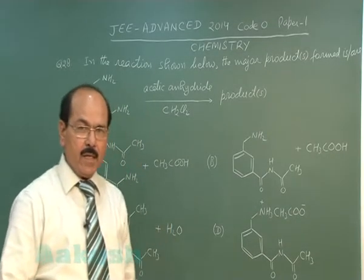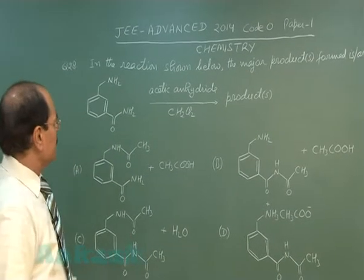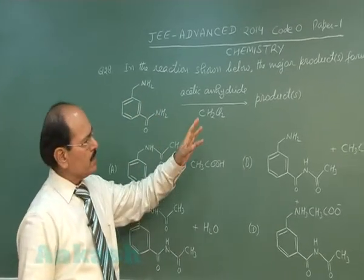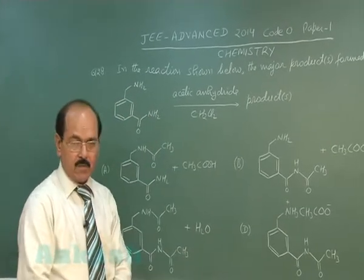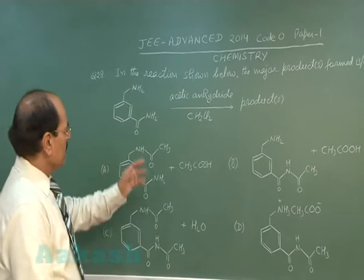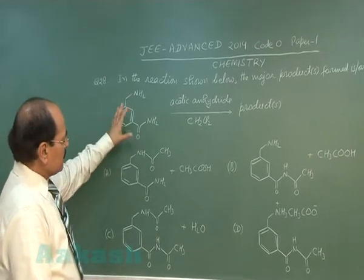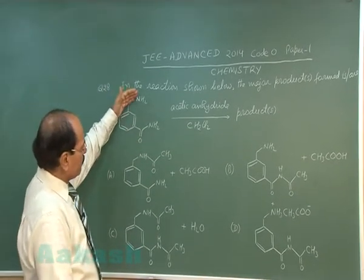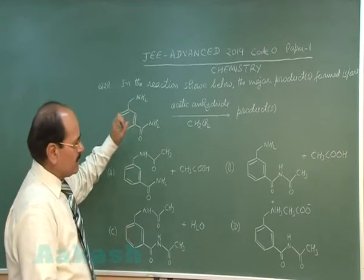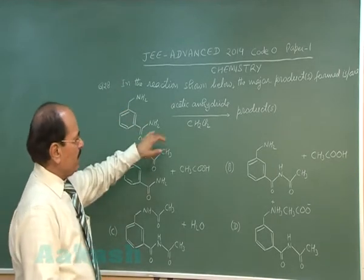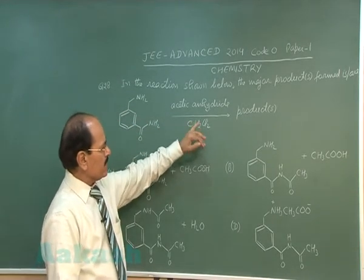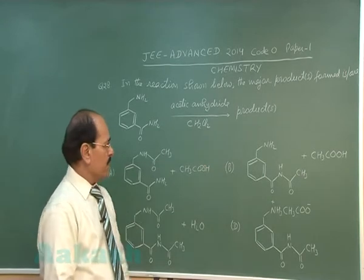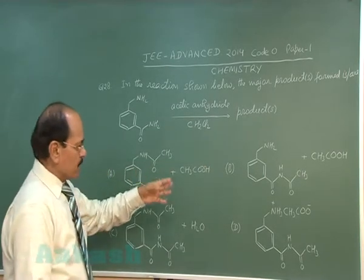Question number 28 reads: in the reaction shown below, what is the major product formed? The structure given has an amine group and an amide group attached to benzene, and the reactant is treated with acetic anhydride in presence of dichloromethane. Four options are given.